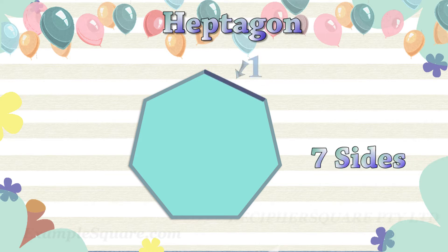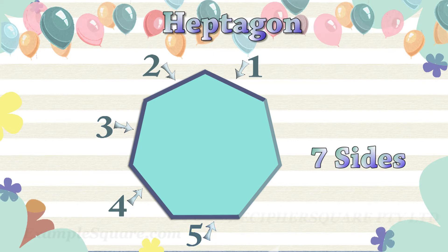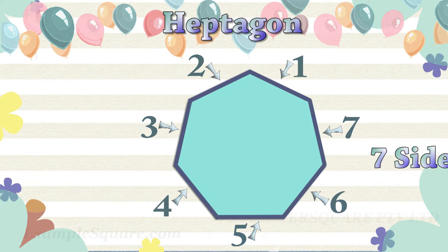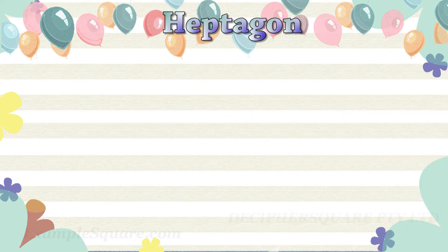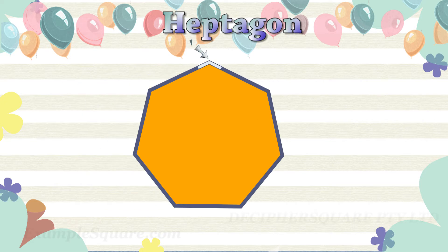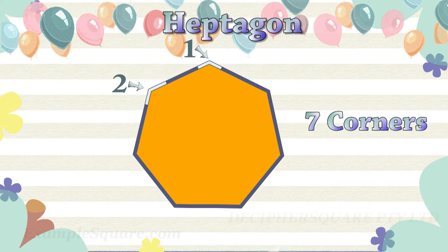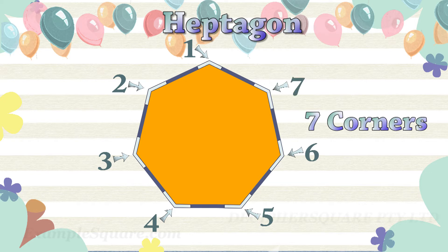Counting the sides: 1, 2, 3, 4, 5, 6, 7. And it has seven corners: 1, 2, 3, 4, 5, 6, 7.